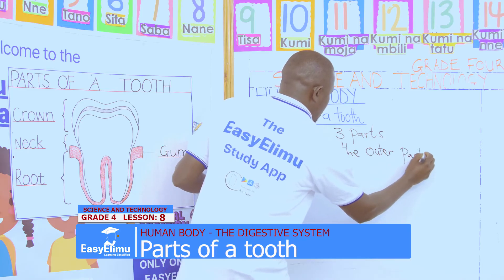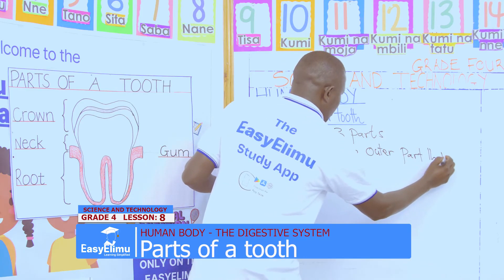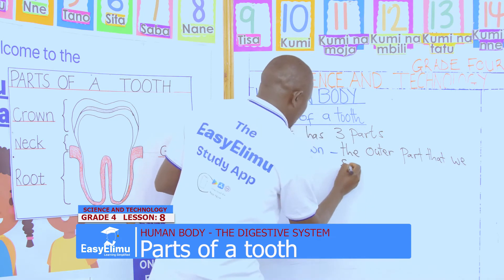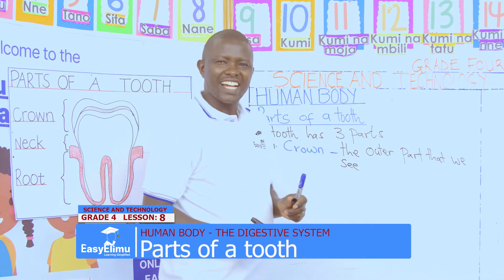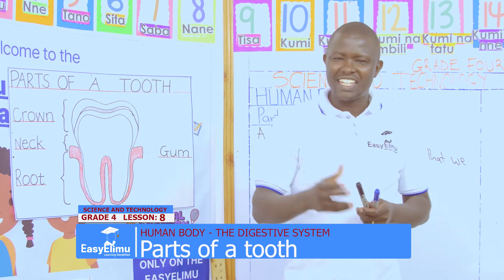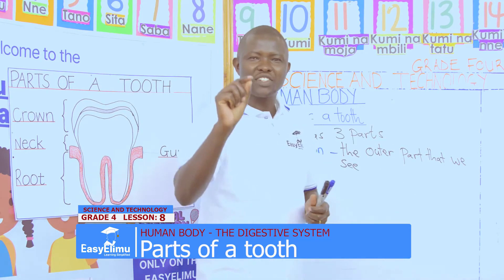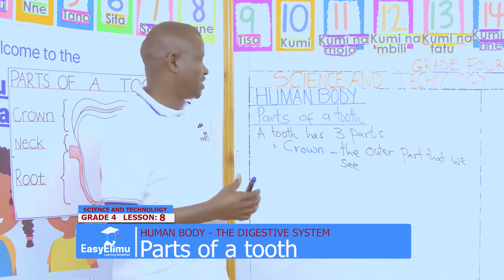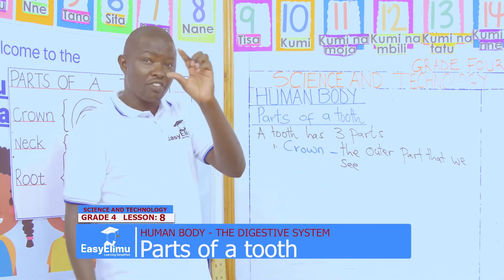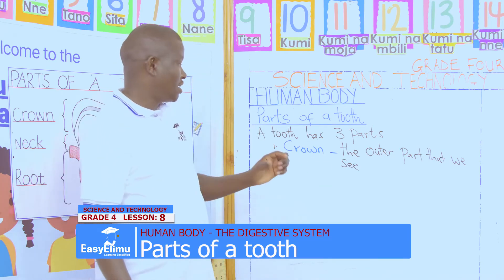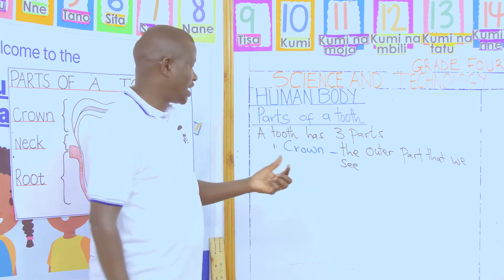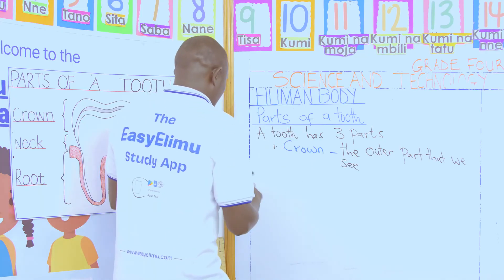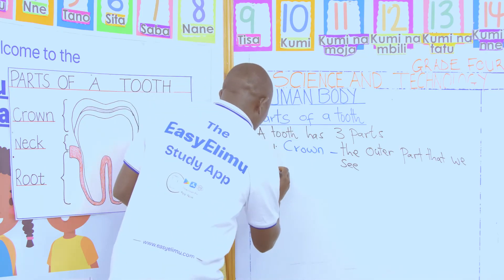What is the color of the outer part that you can see? The outer part of our tooth is white in color, and that is the crown. The part of the tooth that is white in color is the one we call the crown.